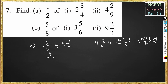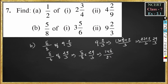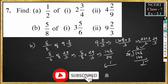So 5 by 8 of 9 and 2 by 3 becomes 5 by 8 of 29 by 3, which equals 5 by 8 into 29 by 3. So 5 into 29 is 145, divided by 8 into 3, which is 24. To convert 145 by 24 to a mixed fraction: 24 sixes are 144, remainder is 1. So 6 is the whole number part, 1 in the numerator, and 24 in the denominator. The answer is 6 and 1 by 24.